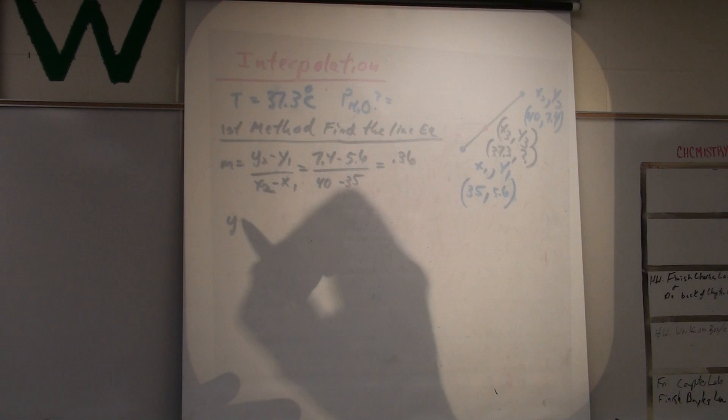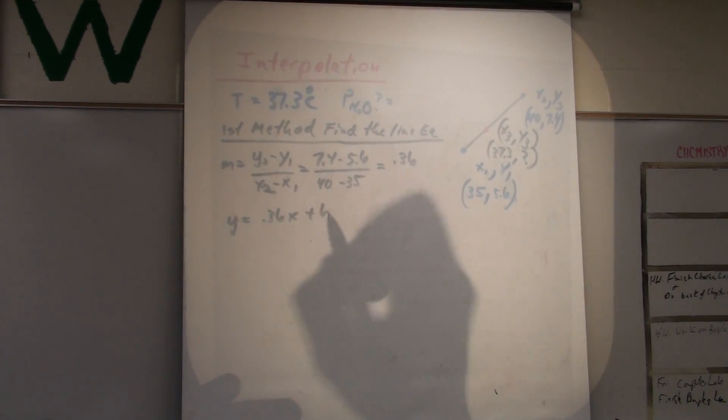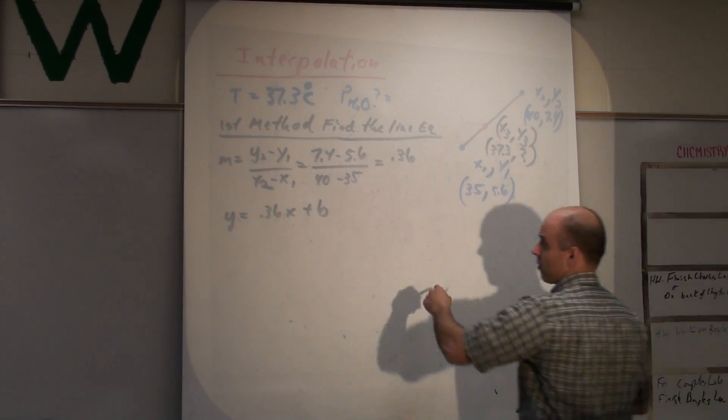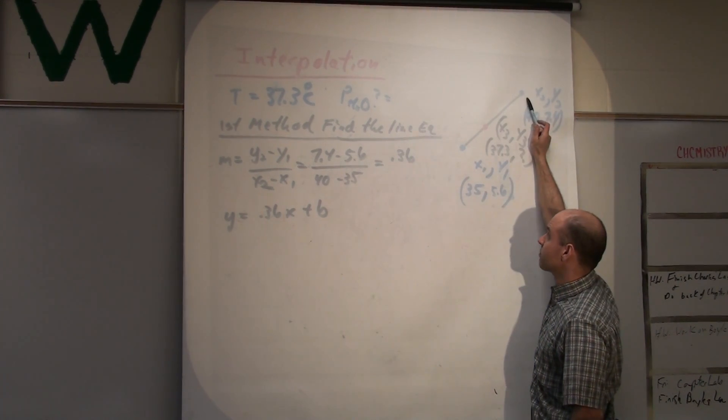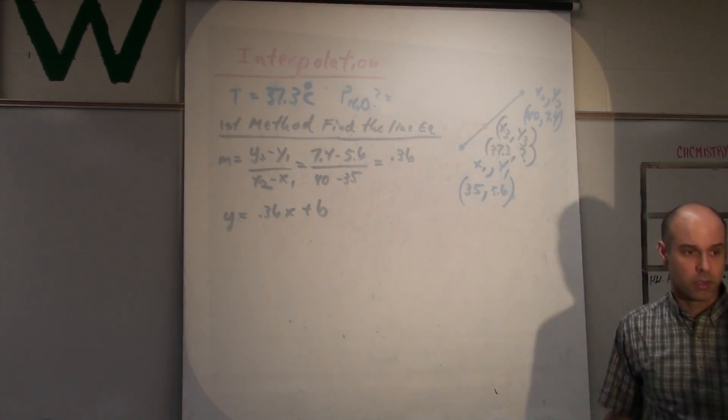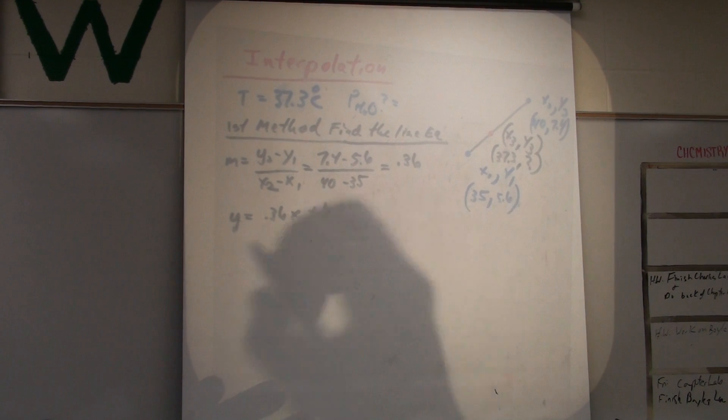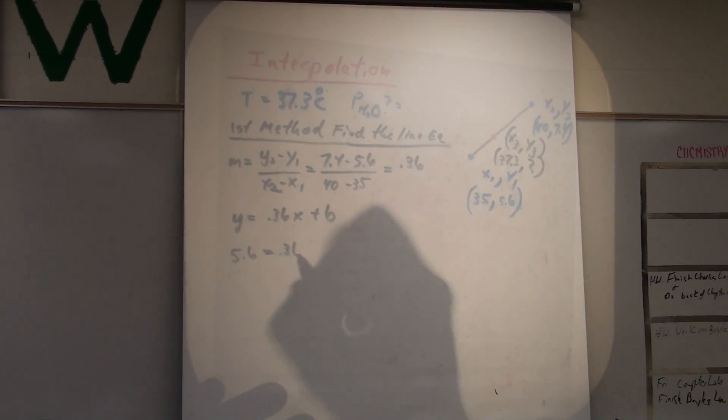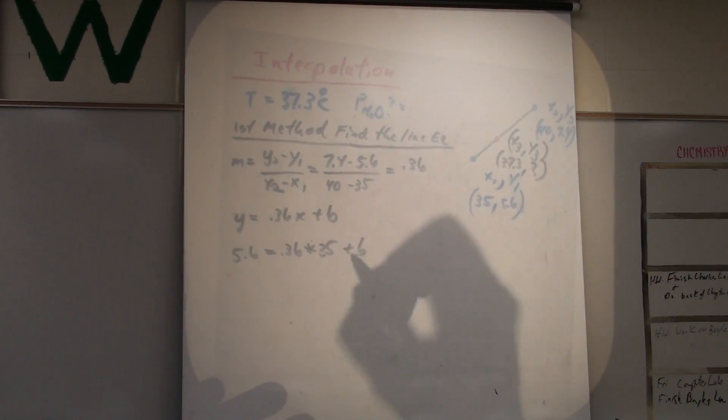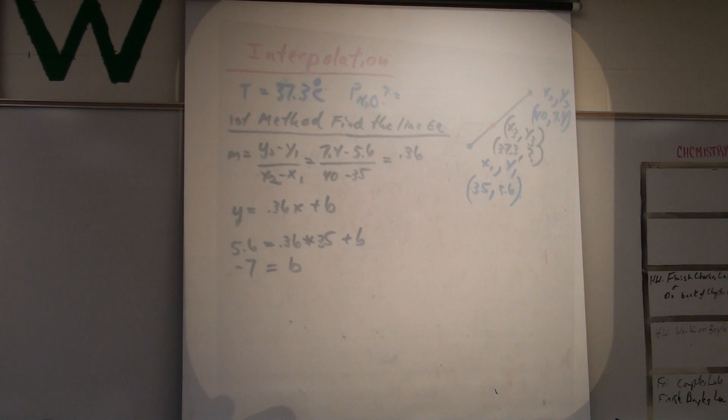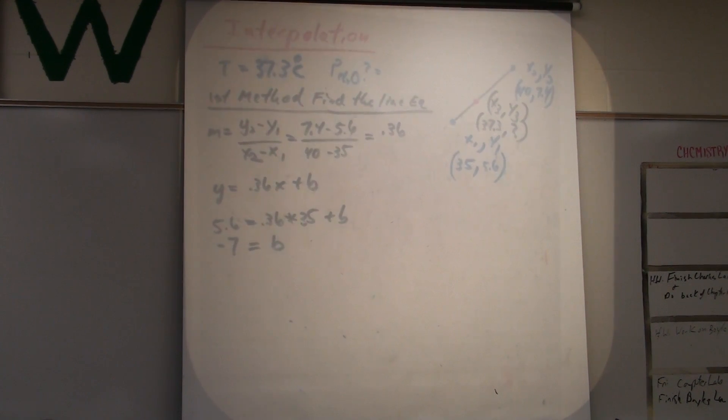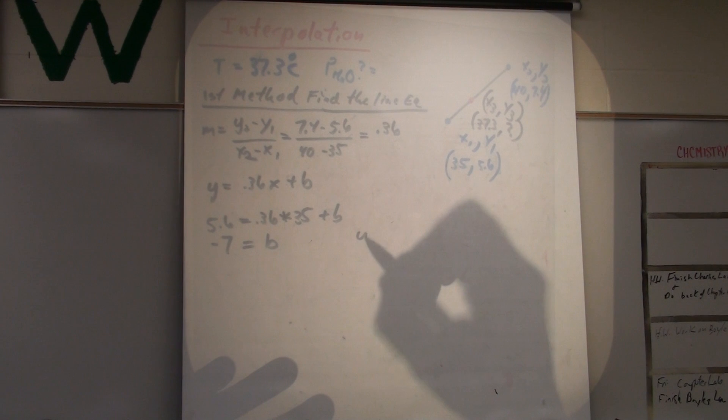So, I have my slope. Now, I need to find my Y-intercept. Find B. You can plug in either this point or that point. It doesn't matter. I'm just used to plugging in X1, Y1. So, we plug in the values for X and Y. So, Y is 5.6. 0.36 times 35 plus B comes out to be negative 7.